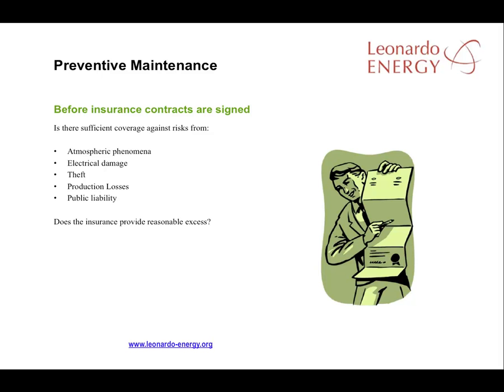Here are the main issues that must be covered by plant insurance: atmospheric phenomena, electrical damages, thefts, production losses, public liability, and the level of excess.